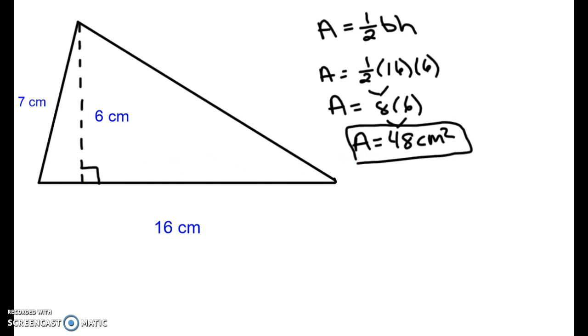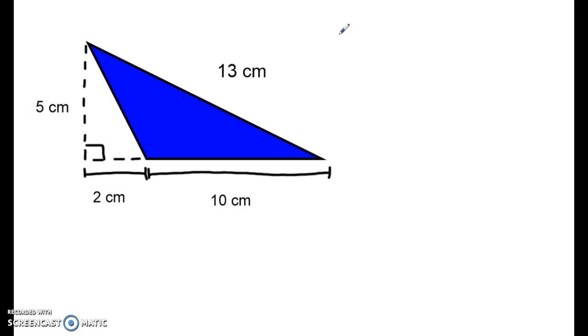Let's try another. In this picture I want to find the area of the blue shaded triangle. I'm going to start off just as I did before by writing down my formula for area of a triangle. A equals one-half base times height.